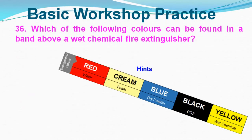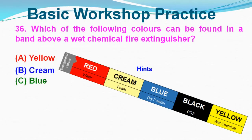Question No. 36: Which of the following colors can be found in a band above a wet chemical fire extinguisher? Option A: Yellow, Option B: Cream, Option C: Blue, Option D: Red. Correct answer is Option A, Yellow.